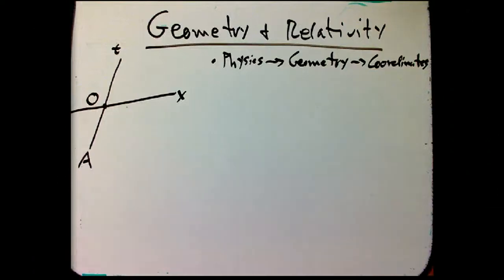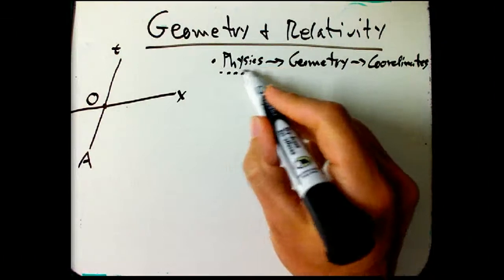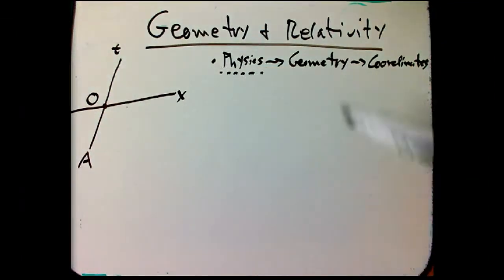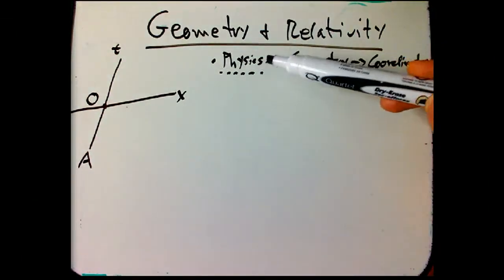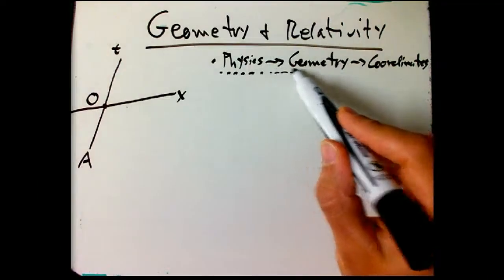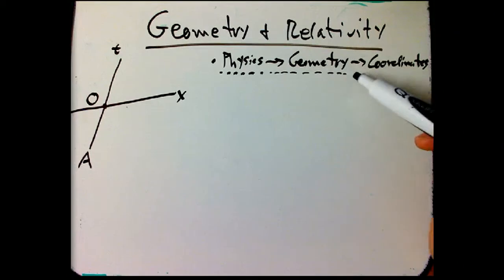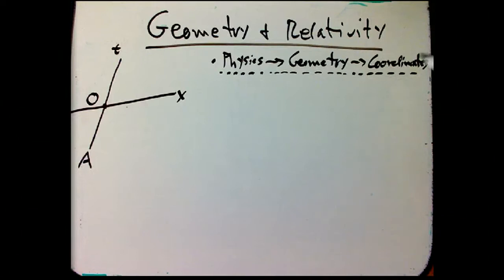I want to show now how, starting with the physics that we've talked about, things like the speed of light is the same for all observers and concepts like proper time, we've seen already how that links to the geometry of Minkowski space. And now I finally want to go back to coordinates.